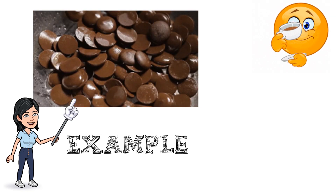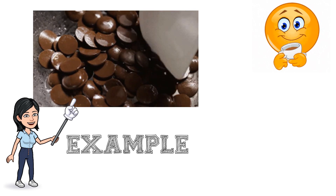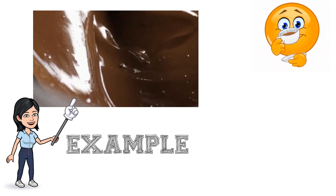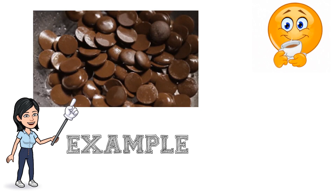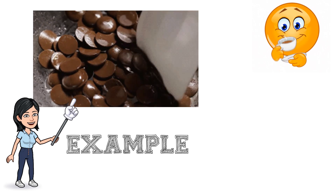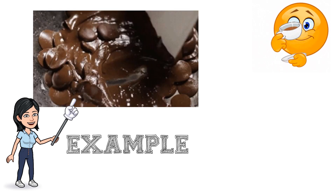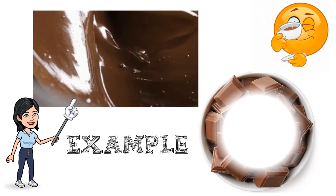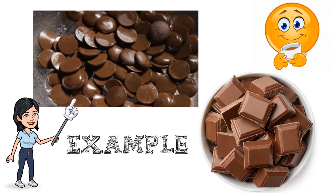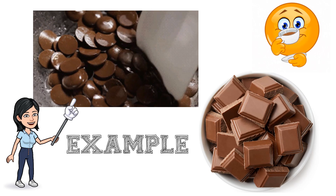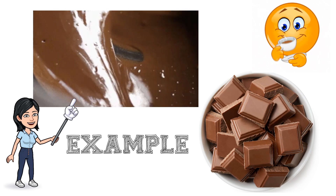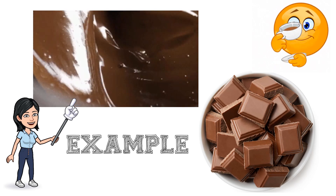When the liquid chocolate is cooled, heat is removed from it. Its temperature decreases and it becomes solid again. It changes from a liquid to a solid.